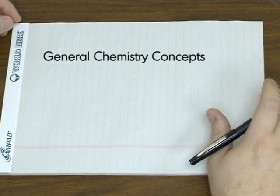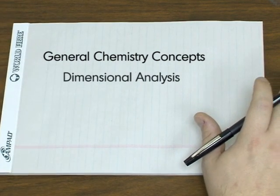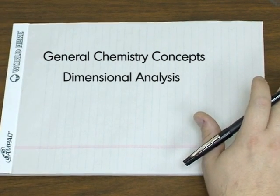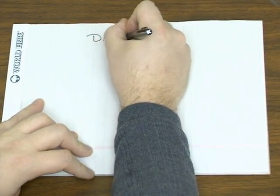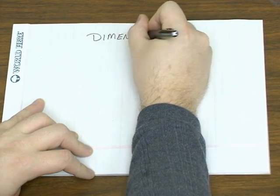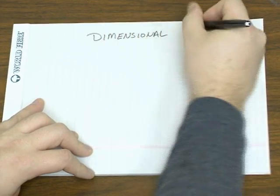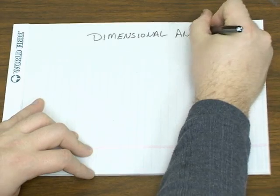Even though general chemistry involves a lot of calculations, you'll find that the vast majority of those calculations is simply converting between one unit and another. The most common way that students are taught how to do unit conversions is dimensional analysis.